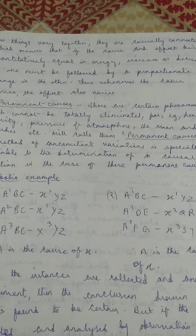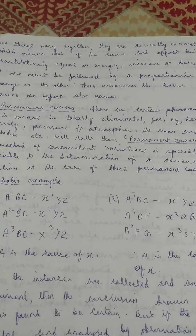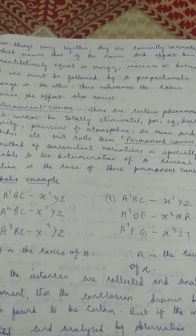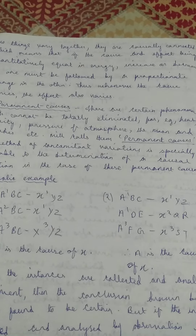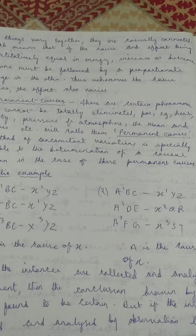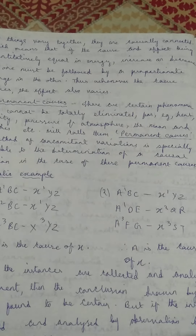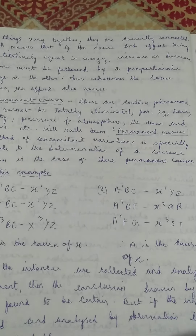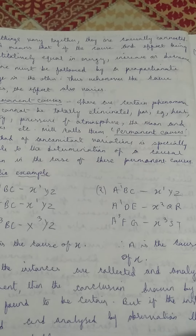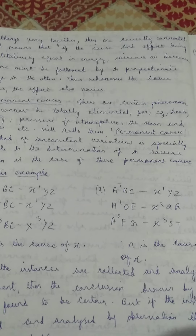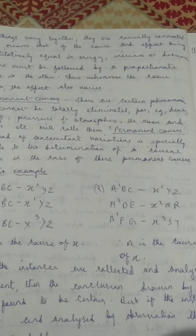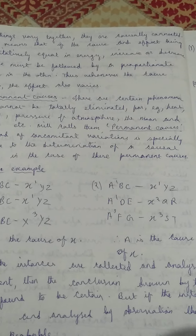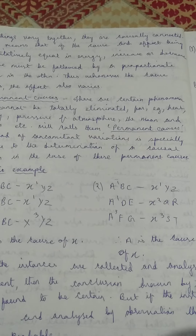If two things are varying together then they are causally connected. For example, the economics example: when the price of a product increases, its demand decreases, and when the price decreases, the demand increases. That means they are varying, so they are causally connected to each other.